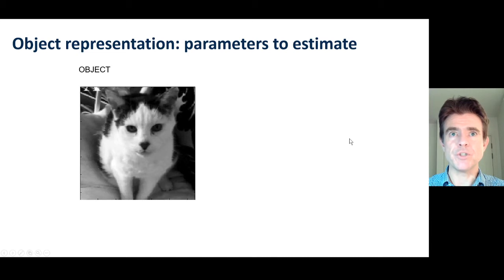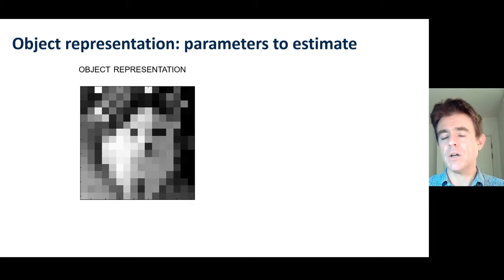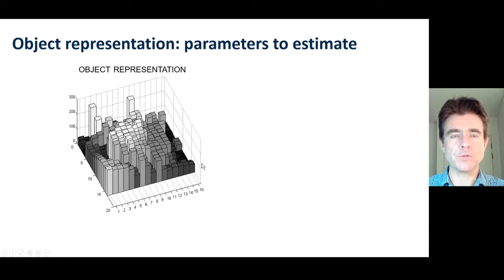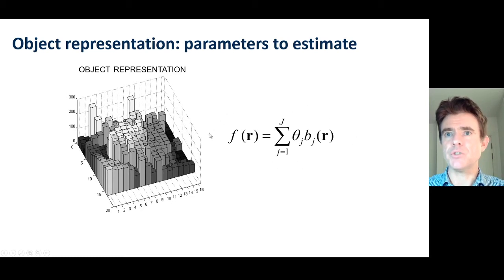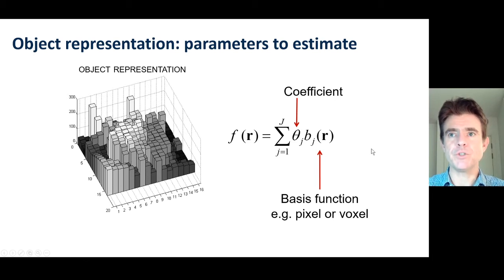We know already about the object representation parameters. The object that you could be imaging would be, in general, a continuous distribution. We're only ever estimating a representation of the object. You can see in the picture of that cat the difference between the high-quality image — meant to capture the idea of an almost continuous function such as a radiotracer distribution — and when we use pixels, that information gets lost to some extent, and we're just trying to find coefficients for those pixel or voxel basis functions.